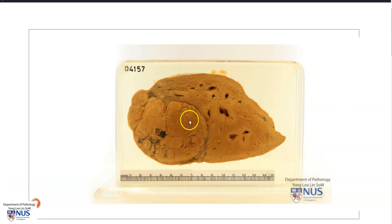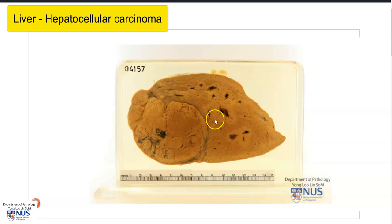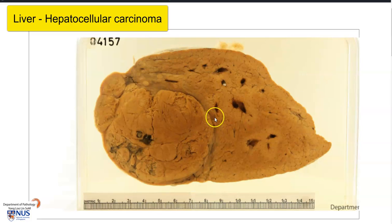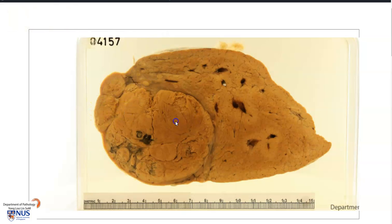Hello, this is a virtual pathology specimen of an example of hepatocellular carcinoma, which is a malignancy arising from the hepatocytes. Here we have a slice of the liver, and we can see this relatively well-circumscribed nodular tumor mass.